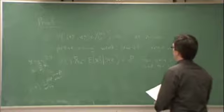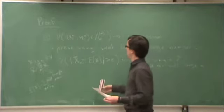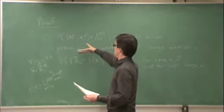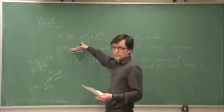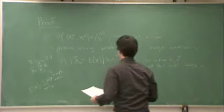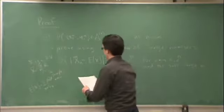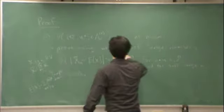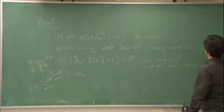We have to check three cases in which the jointly typical set condition could fail: x is atypical, y is atypical, or x and y are jointly atypical. By the Weak Law of Large Numbers — which I'll abbreviate WLLN — we proceed.